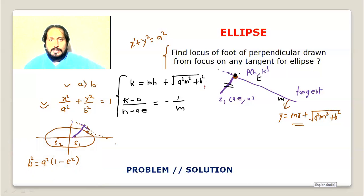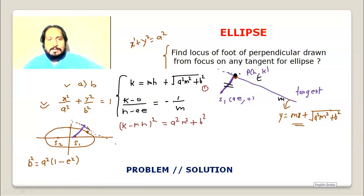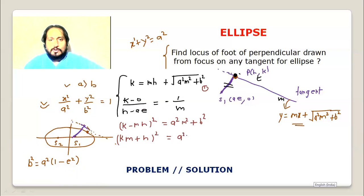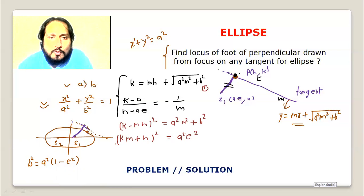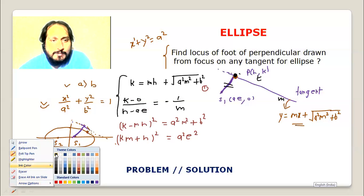To eliminate m, we use both equations. Squaring the first relation: (k minus mh) squared equals a squared m squared plus b squared. Squaring the perpendicularity condition gives: (km plus h) whole squared equals a squared e squared. Now I will add these two equations together.